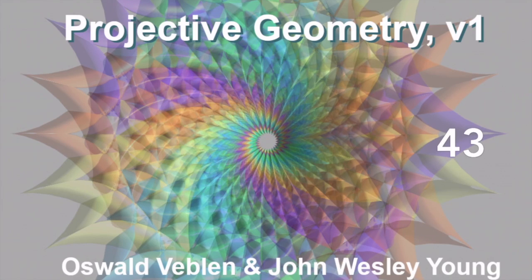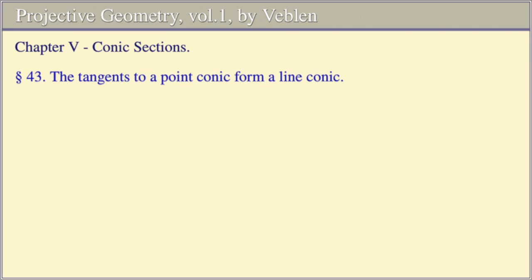Projective Geometry, Volume 1, by Oswald Veblen and John Wesley Young. Chapter 5: Conic Sections. Section 43: The tangents to a point conic form a line conic.